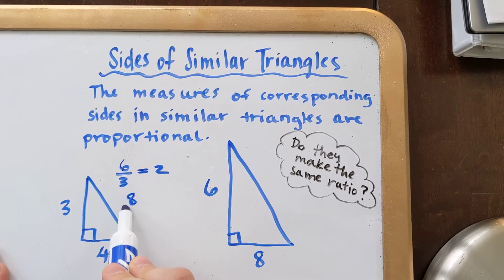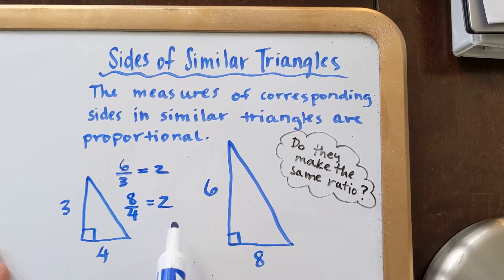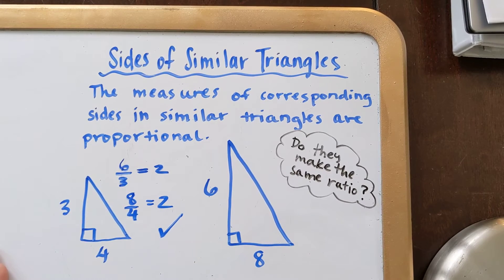Well, let's see here. 8 divided by 4. Yeah, definitely. So you would be able to conclude that these two triangles are similar.